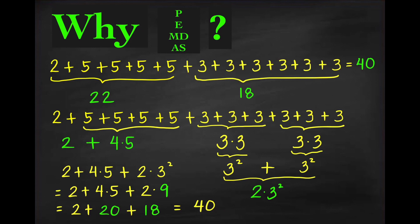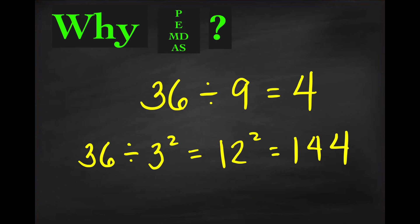Let's have one more example. We have 36 divided by 3 squared. We know it equals 4, and we can write 9 as 3 squared. If you don't follow PEMDAS and apply division first before the exponent, you get 36 divided by 3 is 12, then 12 squared equals 144, which is very far from the correct answer of 4. Therefore, this solution is not acceptable.